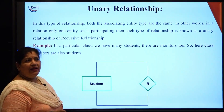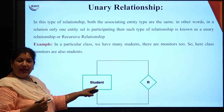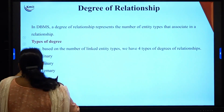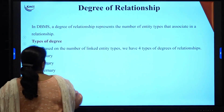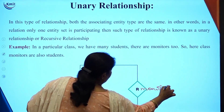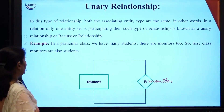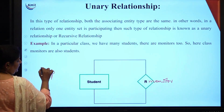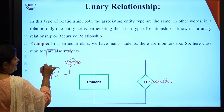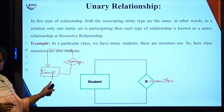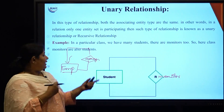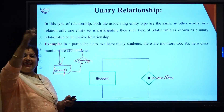For example, consider a student who is also the monitor of the class — one of the students themselves is the monitor. Similarly, an employee manages other employees, so a manager is also an employee. Only one entity type is participating in the relationship — this is called a unary relationship. Another example: a person getting married to a person.